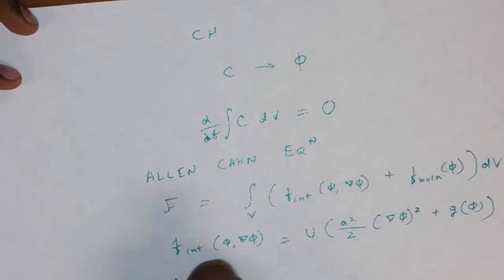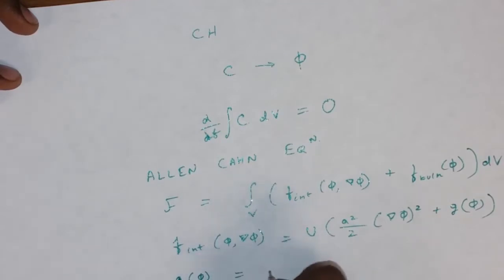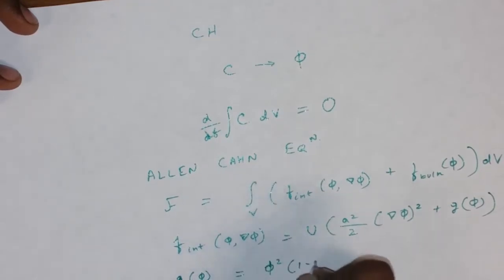And G of phi is going to be your double well potential. We'll come back to that. So, let's define G of phi. This is going to be equal to phi square times 1 minus phi, the whole square. It essentially represents your double well.